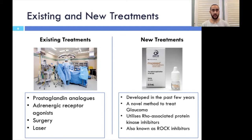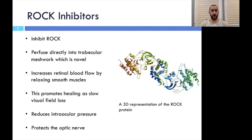However, in the last few years, a new method to manage glaucoma has been discovered. Rho-associated protein kinase inhibitors, otherwise known as ROCK inhibitors, counteract the symptoms of glaucoma in a unique way. ROCK inhibitors exert their effect on the eye by inhibiting the function of the protein, whose role is to produce actin filaments for stabilizing cell structures and promoting cellular contractility. The inhibitors perfuse directly into the trabecular meshwork, which is the drainage point of humor from the eye. This differentiates ROCK inhibitors from other glaucoma drugs, as no others have this target site.